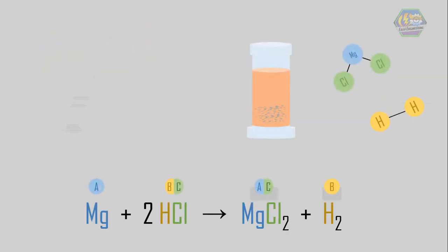For example, the reaction of magnesium with hydrochloric acid. Here the magnesium reacts with hydrochloric acid forming magnesium chloride and hydrogen.